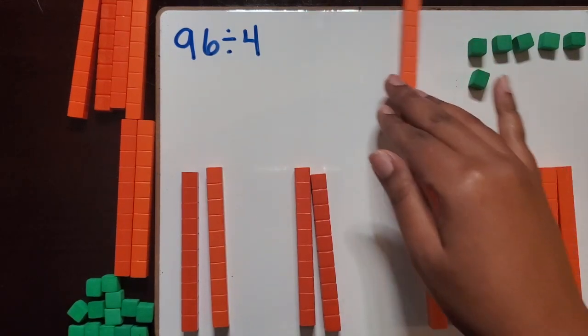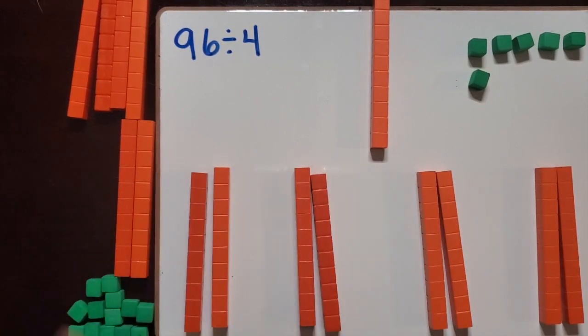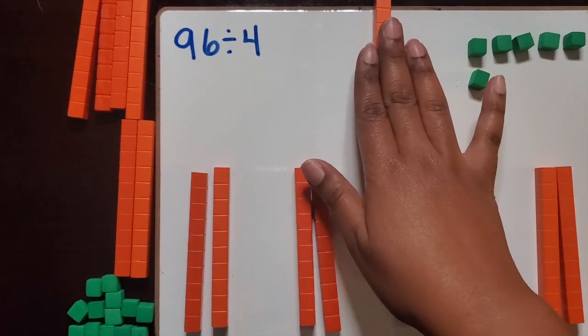So there was enough there. Now thinking again, are there enough tens that each of the groups get a third ten? No, there's not enough.